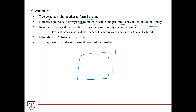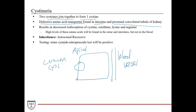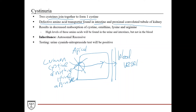The transporter is an apical membrane transporter — on the side of the lumen. As a result, you have decreased reabsorption specifically of cystine, ornithine, lysine, and arginine. Normally these amino acids would cross the apical membrane and come out the basal membrane into the blood, but if you can't carry out this process, you have decreased reabsorption of all of these amino acids.